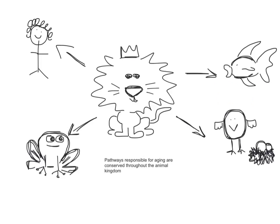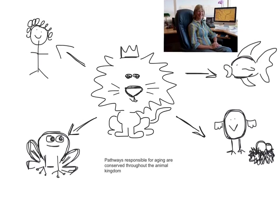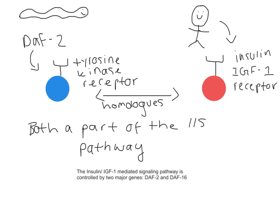In fact, the first pathway involved with aging processes was discovered in C. elegans by Cynthia Kenyon and colleagues, and is conserved throughout the animal kingdom. The insulin-IGF1-mediated signaling pathway in C. elegans is controlled by two major genes, DAF2 and DAF16.